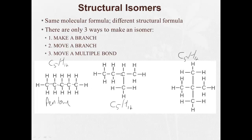Here, if we count the longest chain, 1, 2, 3, 4, or 1, 2, 3, 4. And it's got one methyl group on carbon number 2. So this is going to be 2-methylbutane.